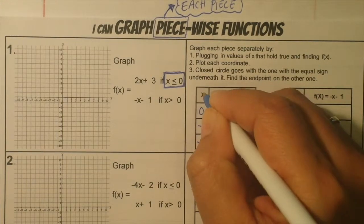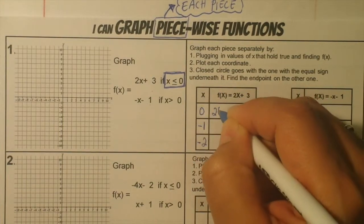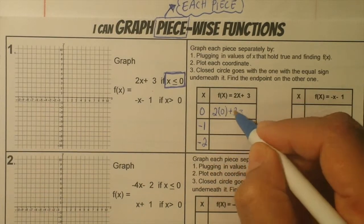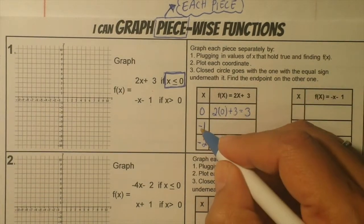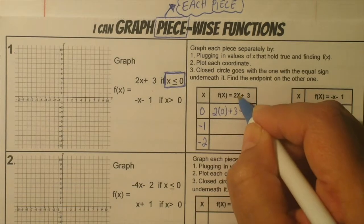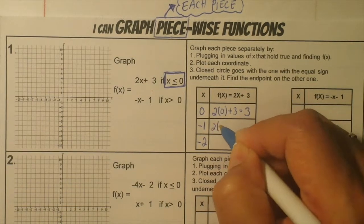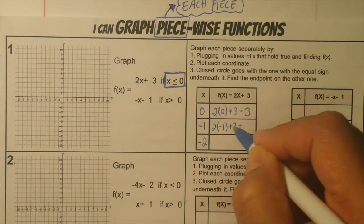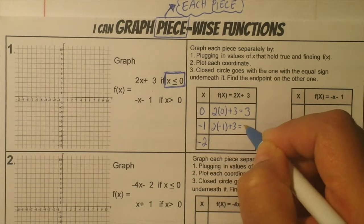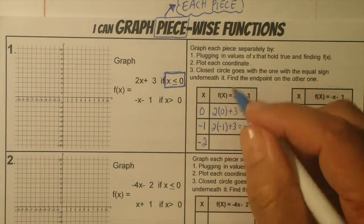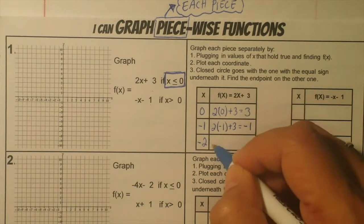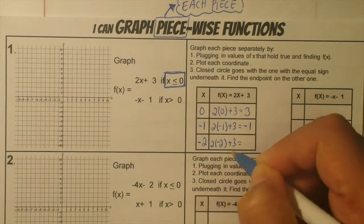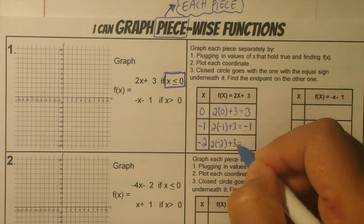Where you see x, you're going to put 0. So it's 2 times 0 plus 3 — 0 plus 3 is 3. Then where you see x put negative 1, so 2 times negative 1 plus 3: that's negative 2 plus 3, which is positive 1. Then negative 2: 2 times negative 2 is negative 4. Negative 4 plus 3 is positive 1.